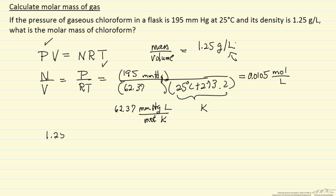And 1.25 grams per liter, and I know if I essentially convert units, 0.0105 moles per liter, I'll end up with the number of grams per mole, which would be the molecular mass of chloroform.